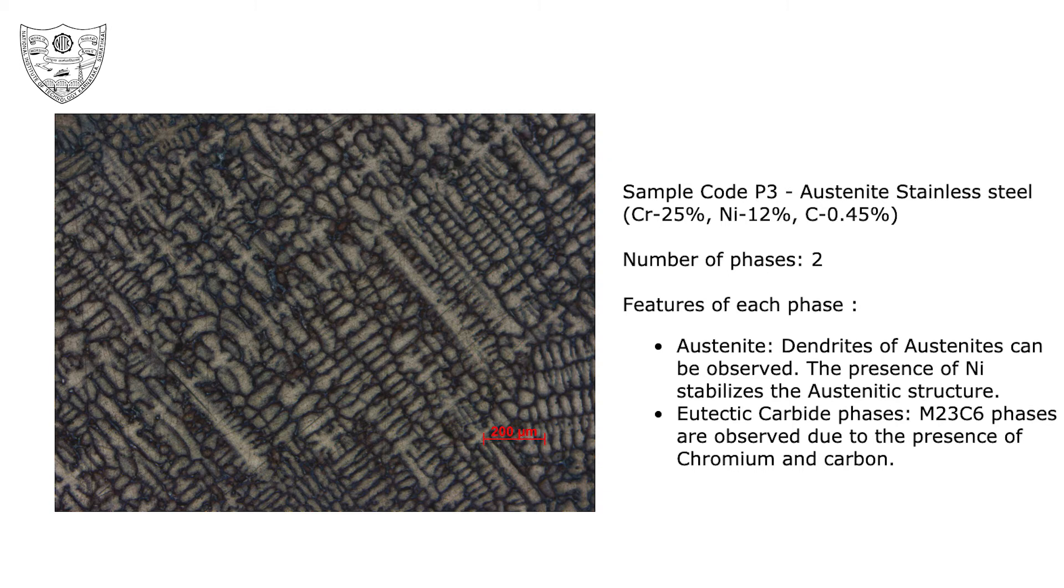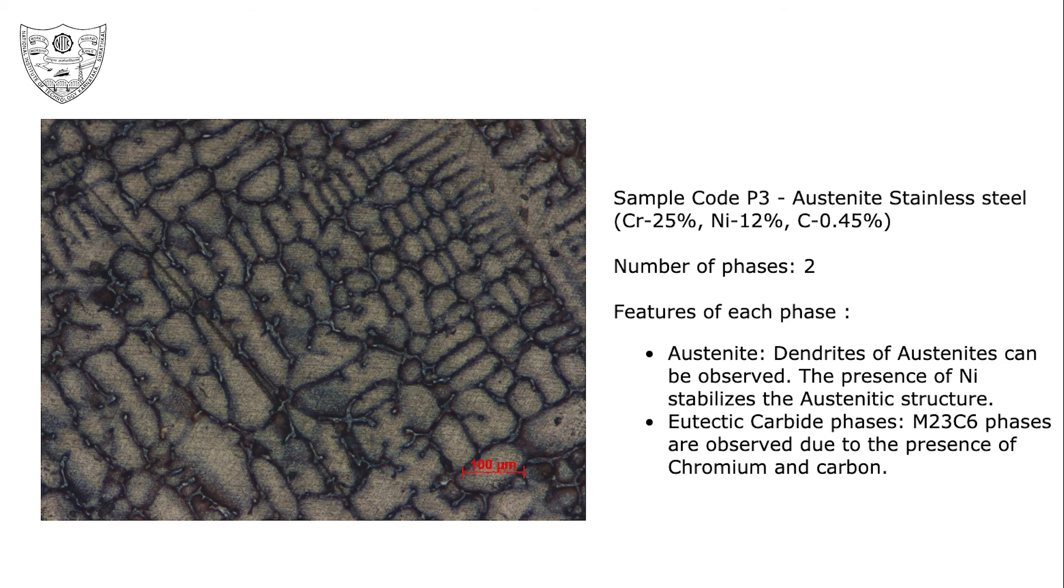What we observe here is the image recorded at a magnification of 50x. The sample is austenitic stainless steel with chromium 25%, nickel 12% and carbon 0.45%. This is the image which is seen at higher magnification.